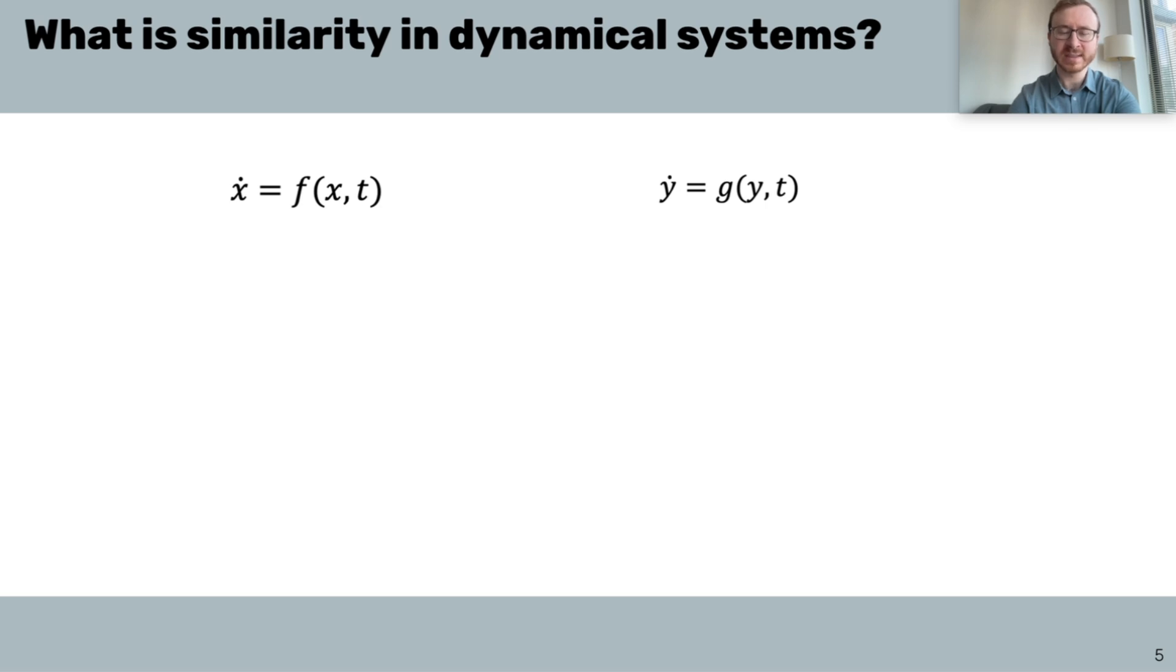So, what is similarity in dynamical systems theory? Suppose we have two different dynamical systems, F and G, that have a mapping between them. That is, there exists some invertible transform, phi, that can align trajectories between each system. This means that the two functions that govern their dynamics are related as follows.